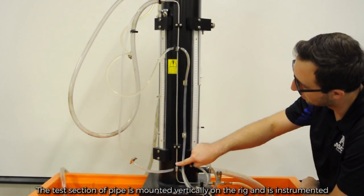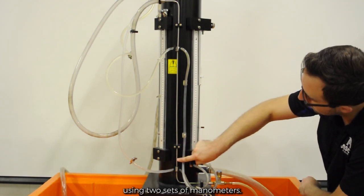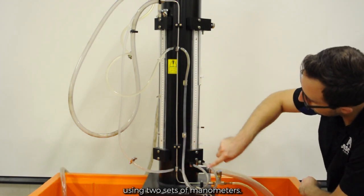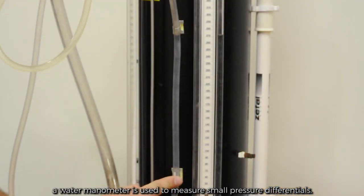The test section of pipe is mounted vertically on the rig and is instrumented using two sets of manometers. A differential pressure gauge is used to measure large pressure differentials and a water manometer is used to measure small pressure differentials.